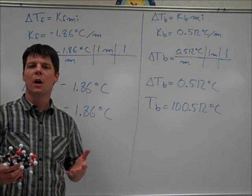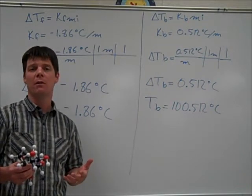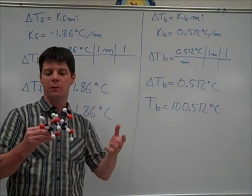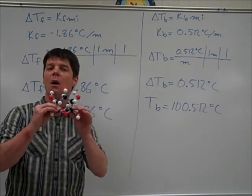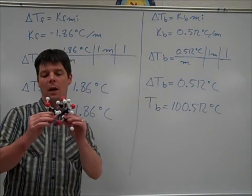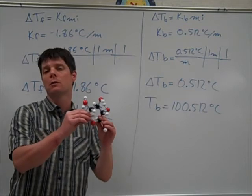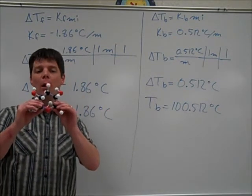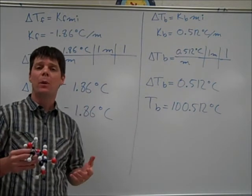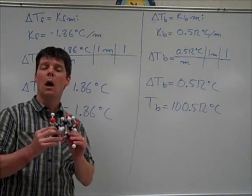When considering how a glucose solution changes the boiling temperature, we need to keep in mind what happens when molecular compounds dissolve in water. Here's a model representing a glucose molecule. When solid glucose dissolves, the molecule itself is not broken apart — it's just pulled away from other glucose molecules. So one glucose molecule creates one dissolved particle. Therefore, the i value for any molecular compound in freezing point depression or boiling point elevation calculations will always be 1.